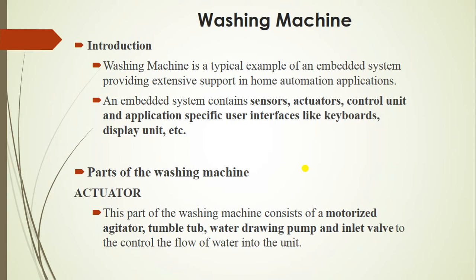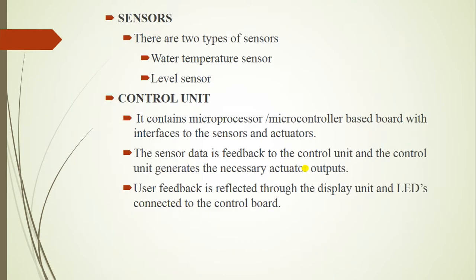Next, we are going to see sensors. There are two types of sensors. The first one is the water temperature sensor and the next one is the level sensor. Water temperature sensors are used to measure the temperature of the water drawn into the washing machine. Level sensors are used to measure how much water is filled inside the water drum.